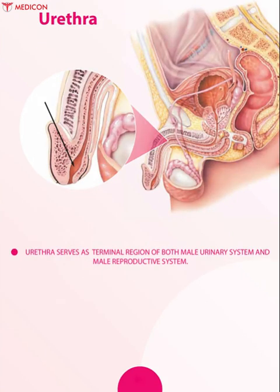Urethra serves as a terminal region of both the male urinary system and the male reproductive system. The urethra begins within the bladder wall and ends in the distal glans of the penis.